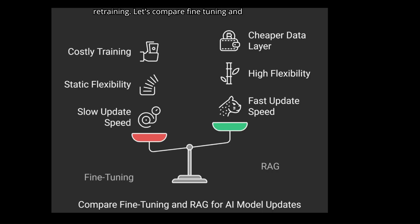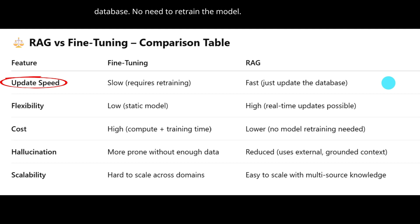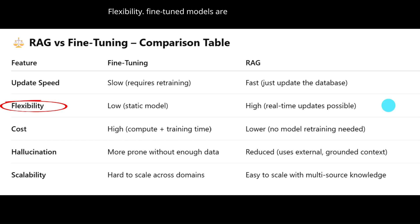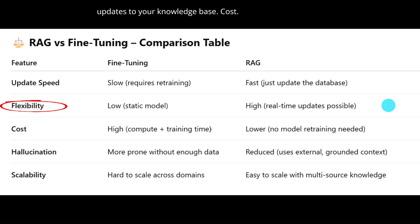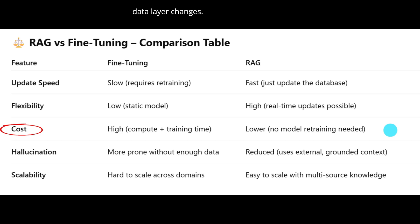Let's compare fine-tuning and RAG across key features. Update speed: fine-tuning is slow since it needs retraining every time you add new data; RAG is fast — you just update the database with no need to retrain the model. Flexibility: fine-tuned models are static and hard to change; RAG is highly flexible and supports real-time updates to your knowledge base. Cost: fine-tuning is costly due to compute and training time; RAG is much cheaper since the model stays frozen and only the data layer changes.